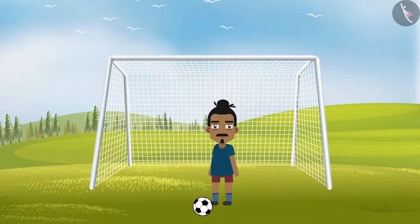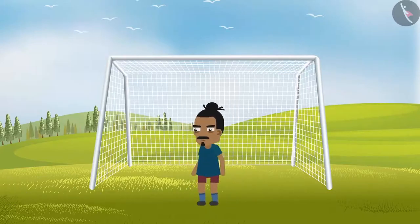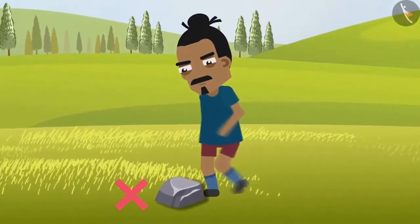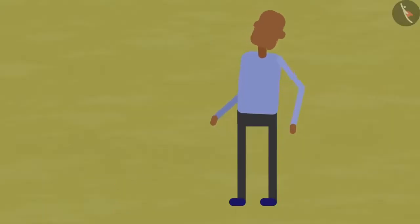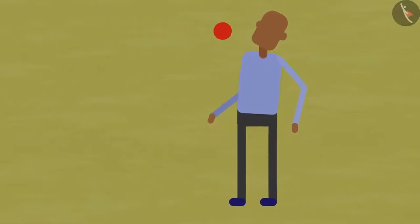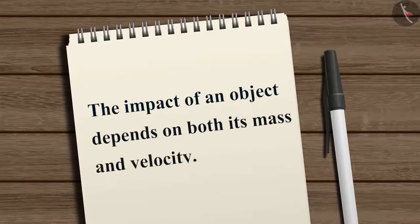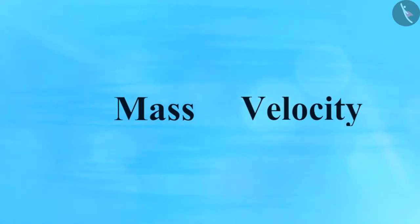Let us understand this with some examples. In a football match, when the footballer kicks a ball, the ball moves but the player does not get hurt. However, if the player were to kick a rock, the player's leg would get seriously injured. Even when a small object like a cricket ball is thrown with a high velocity, it can hurt a person. These examples suggest that the impact of an object depends on both its mass and velocity, indicating there may exist a certain quantity that combines the mass and velocity of an object.